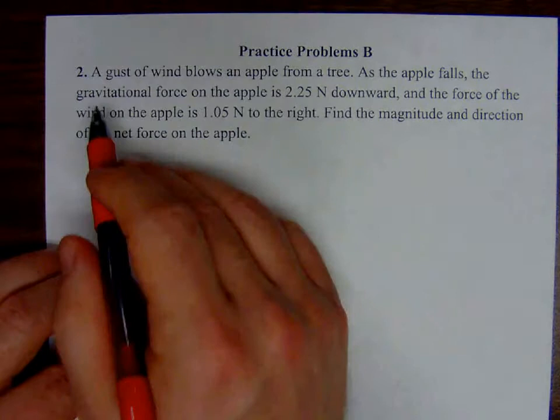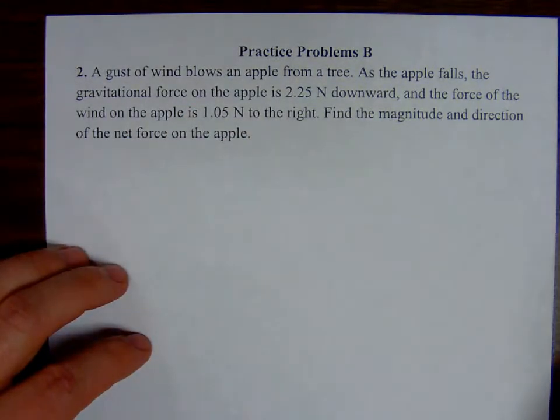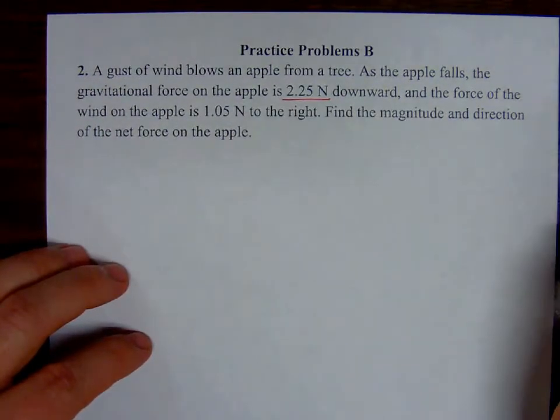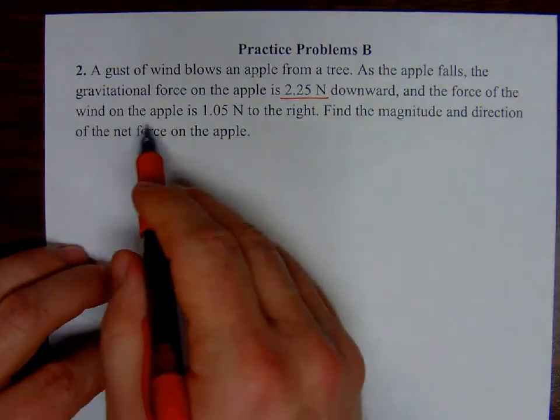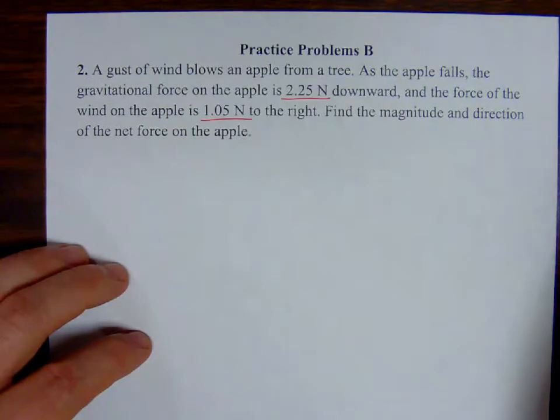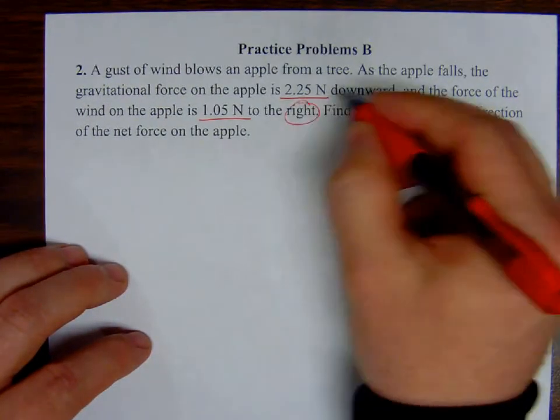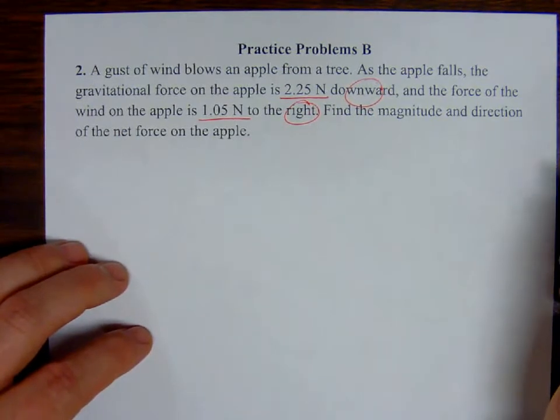Number two: a gust of wind blows an apple from a tree. As the apple falls, the gravitational force on the apple is 2.25 newtons downward, and the force of the wind on the apple is 1.05 newtons to the right. We've got some directions, we've got some forces. Find the magnitude and direction of the net force on the apple.